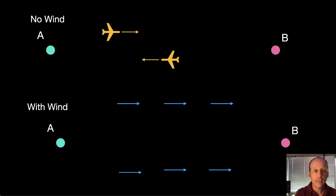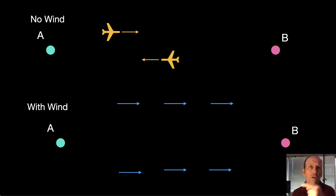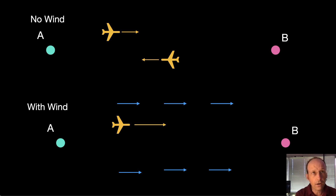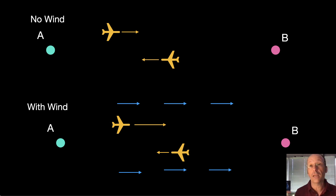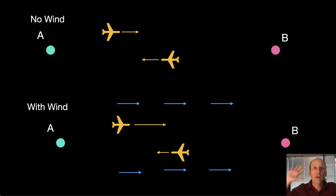In this case there is wind — wind going from A to B. So on the way there you're going to go faster, so it's going to take less time. And on the way back you're going to go slower because you're going against the wind. So the question is, how do these two times compare? Let's go.